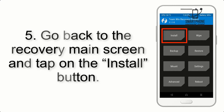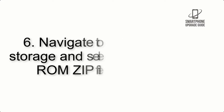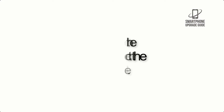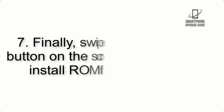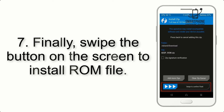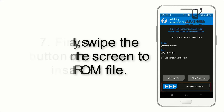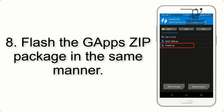Step 5: Go back to the recovery main screen and tap on the Install button. Step 6: Navigate to the storage and select the ROM zip file. Step 7: Finally, swipe the button on the screen to install the ROM file.